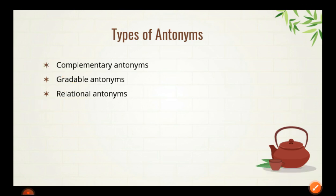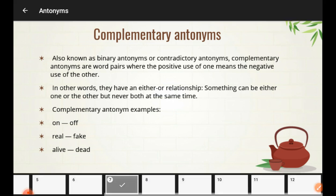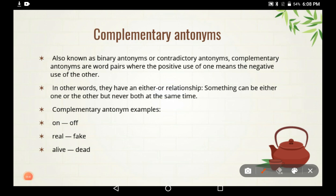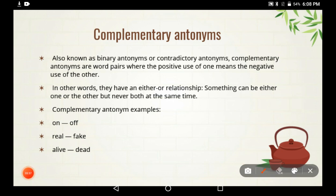Complementary antonyms are also called binary antonyms or contradictory antonyms. Complementary antonyms are word pairs where the positive use of one means the negative use of the other — if one means positive, then the other means negative.